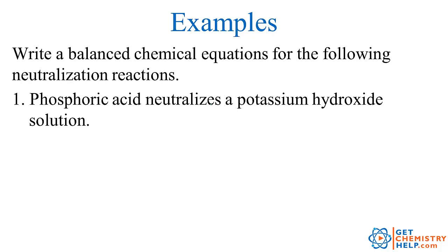So let's try a few examples. Phosphoric acid neutralizes a potassium hydroxide solution. We know from our lesson on naming acids that '-ic acid' means the anion came from '-ate', so this would have come from phosphate. Phosphate is PO4 3-negative. To make that an acid, we combine it with H+, so phosphoric acid would be H3PO4. And we learned that acids are generally soluble, so aqueous.